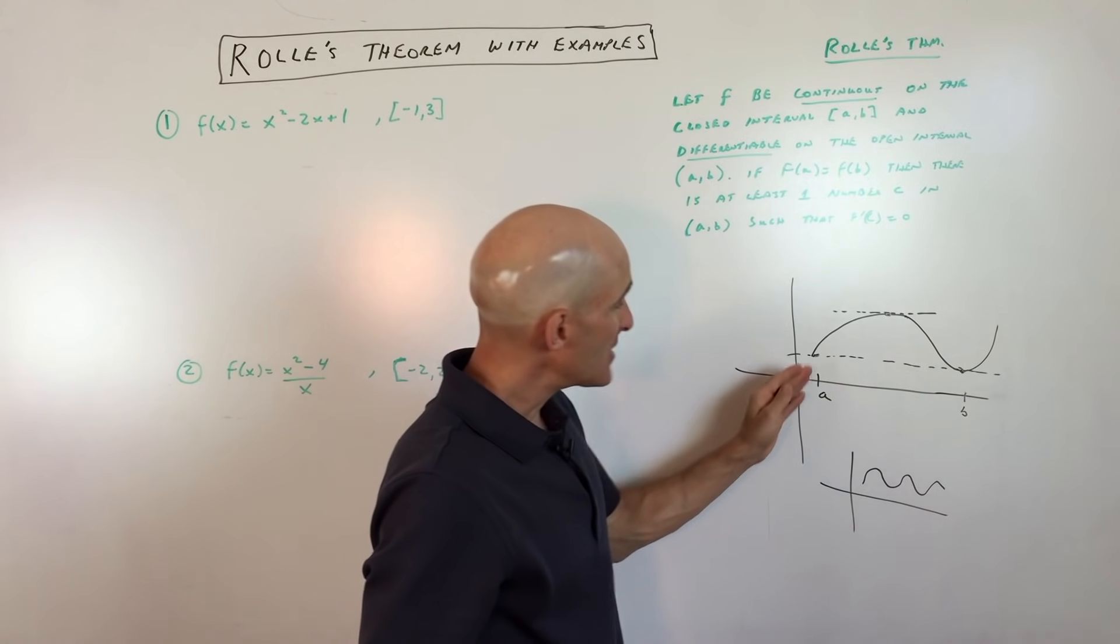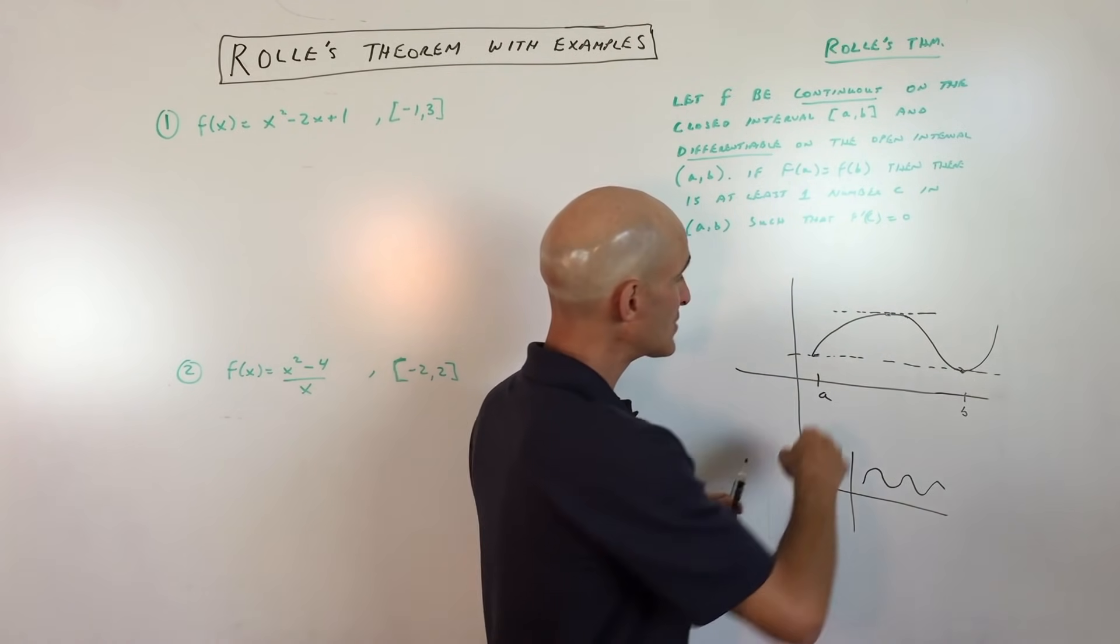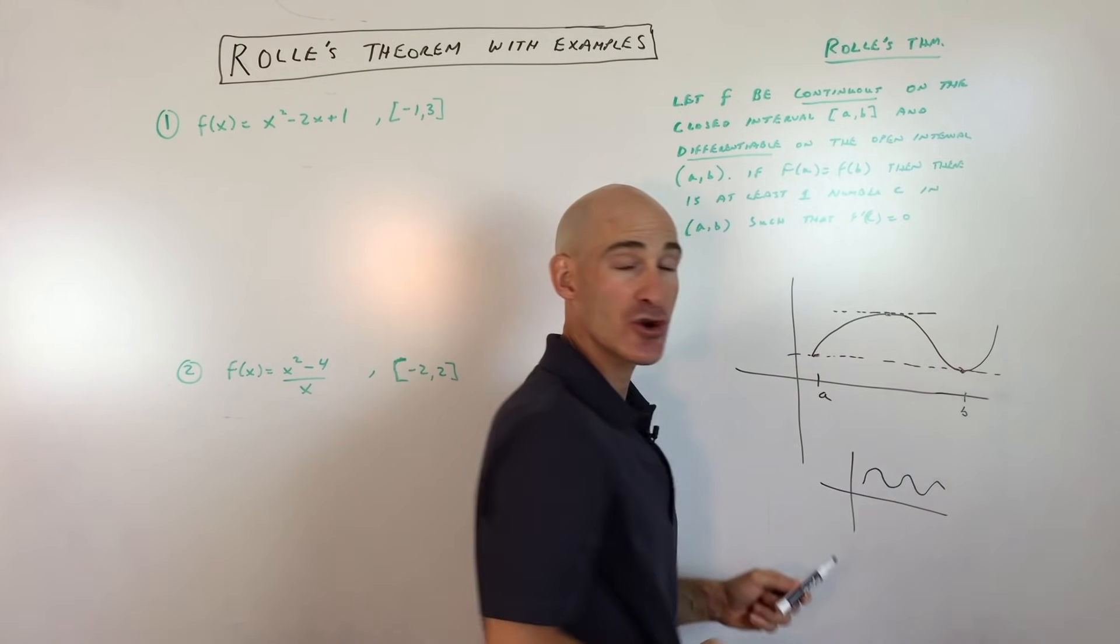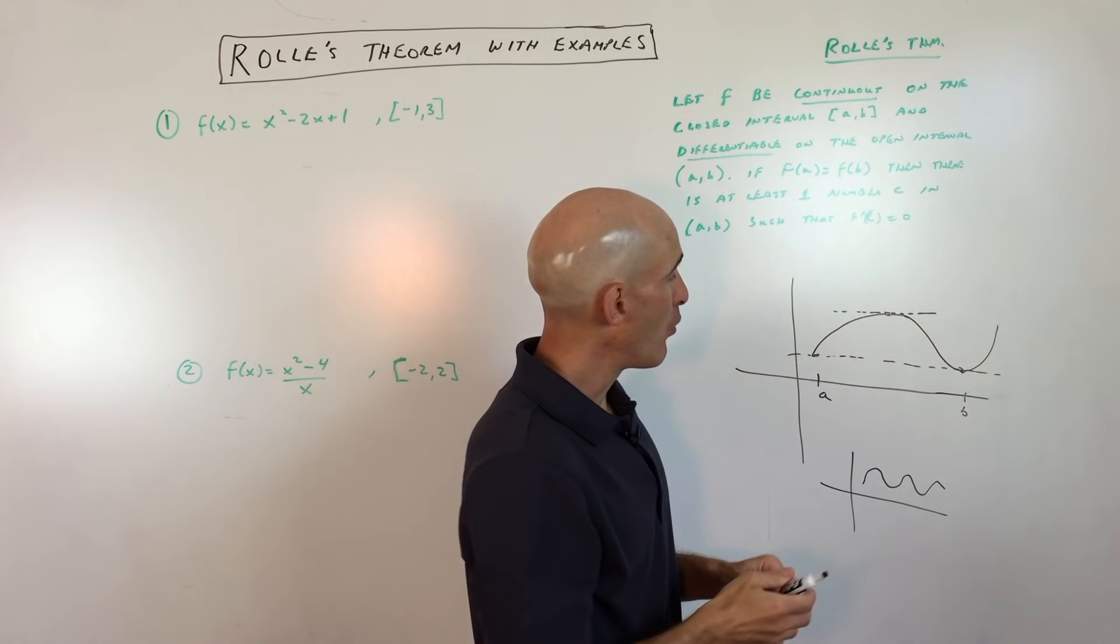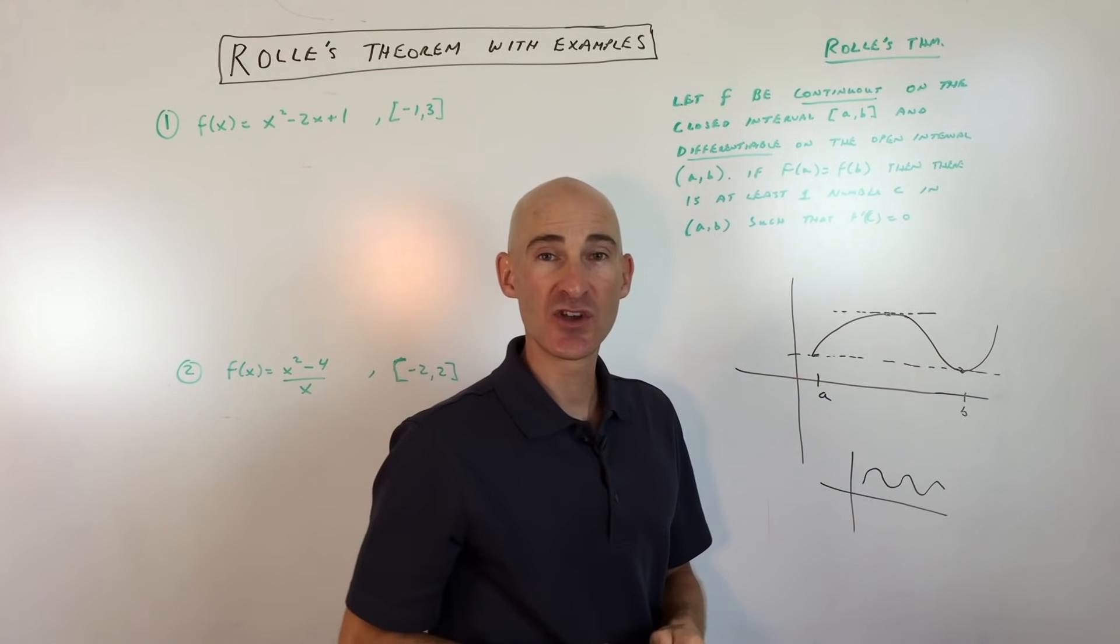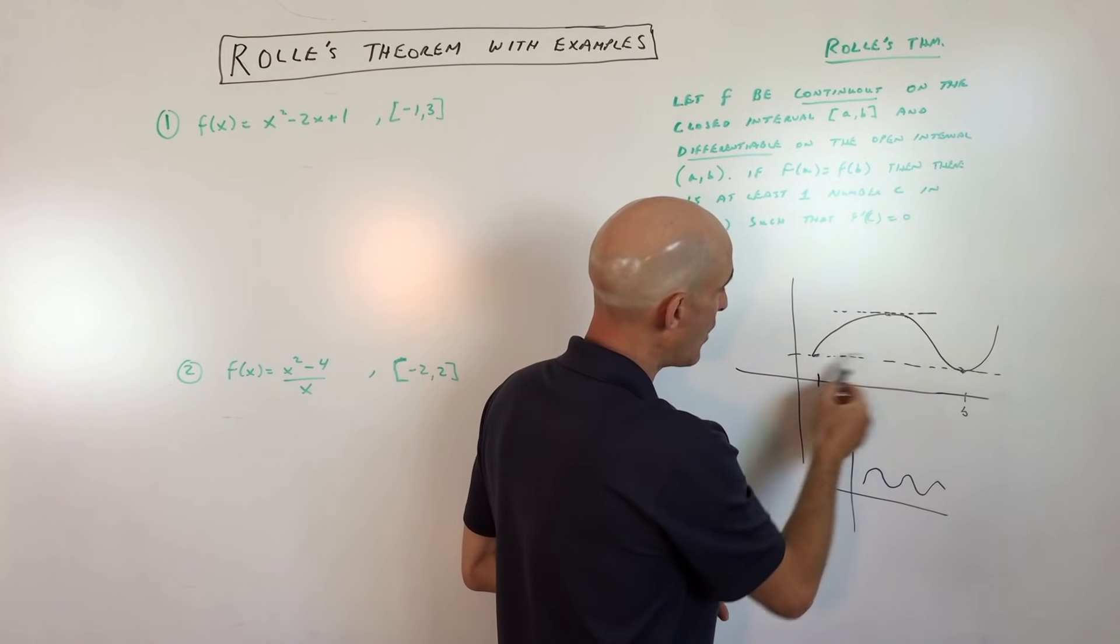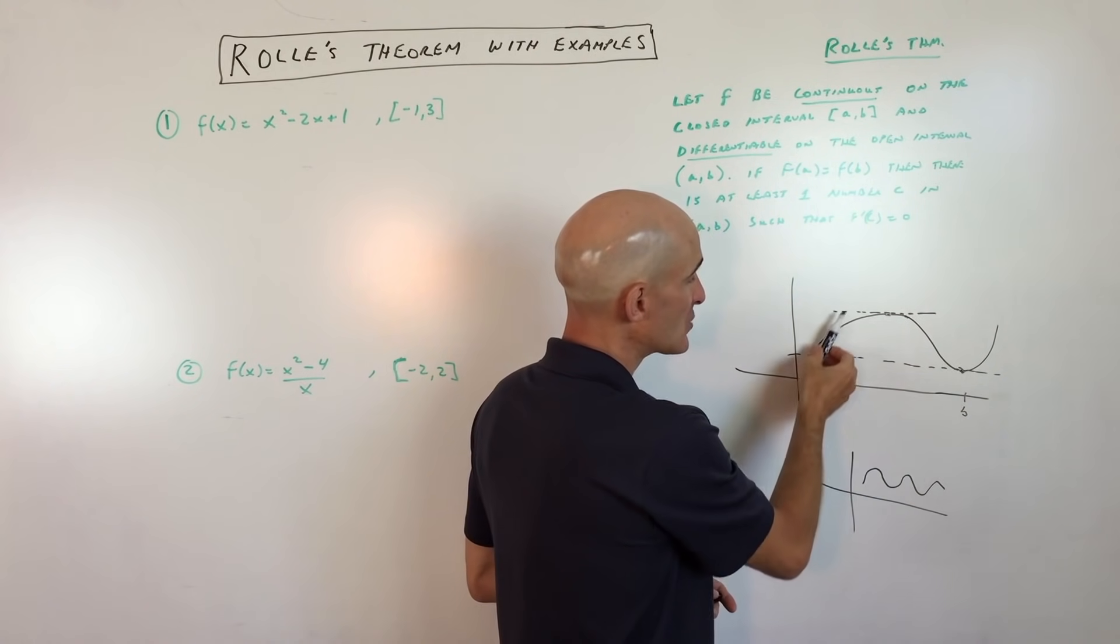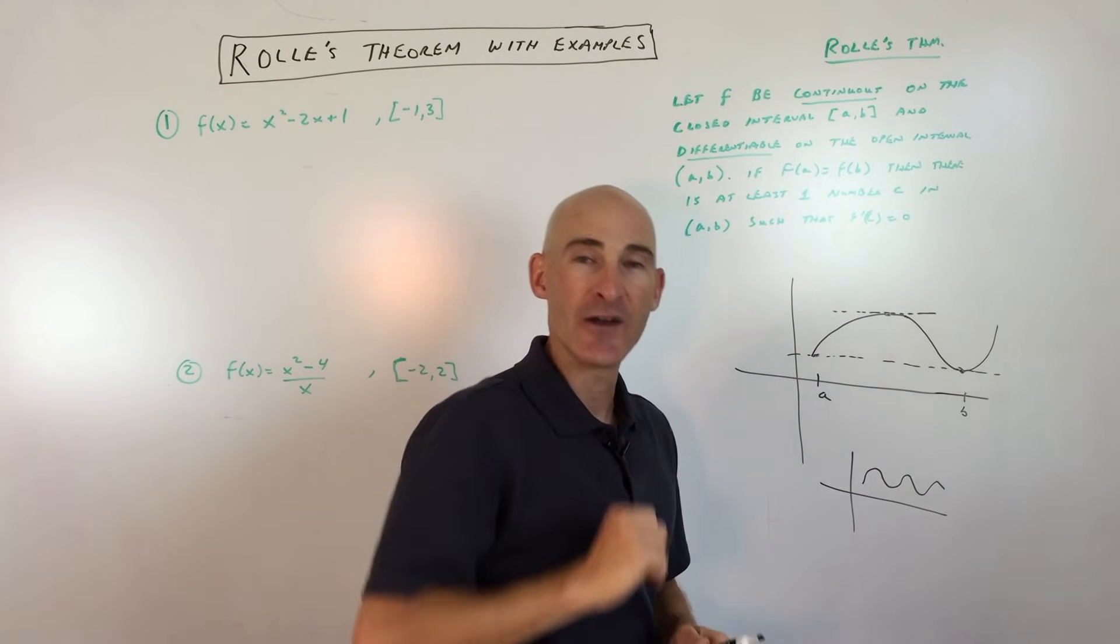So because it has to reach that same y value at both of the endpoints, the graph has to basically bend or turn somewhere in between those two points. And that's what allows us to find the point where the tangent line is going to be horizontal. It's like a roller coaster. You're going up and you're coming back down. You reach that same height. So somewhere in between there, you're going to be horizontal.